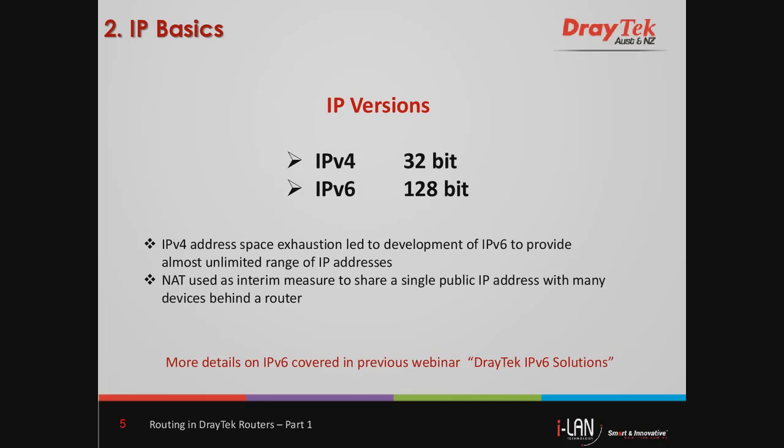There are two versions of the Internet Protocol in common use on the Internet today: IPv4 and IPv6. IPv4 was developed back in the 1970s, and at the time it was thought to be more than enough to handle all the network devices in the world. However, since it uses 32 bits for addressing, this put a limit on the number of possible IP addresses. With the expansion of the Internet, it became apparent that the original assumptions were not correct, primarily due to the explosion in the number of IP-capable devices continuously being released in the market.